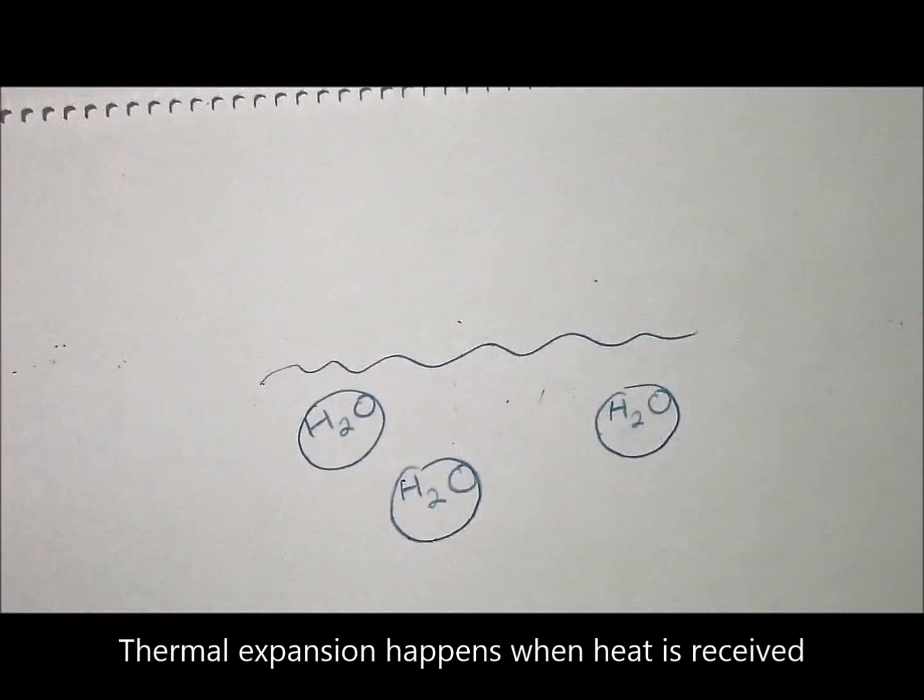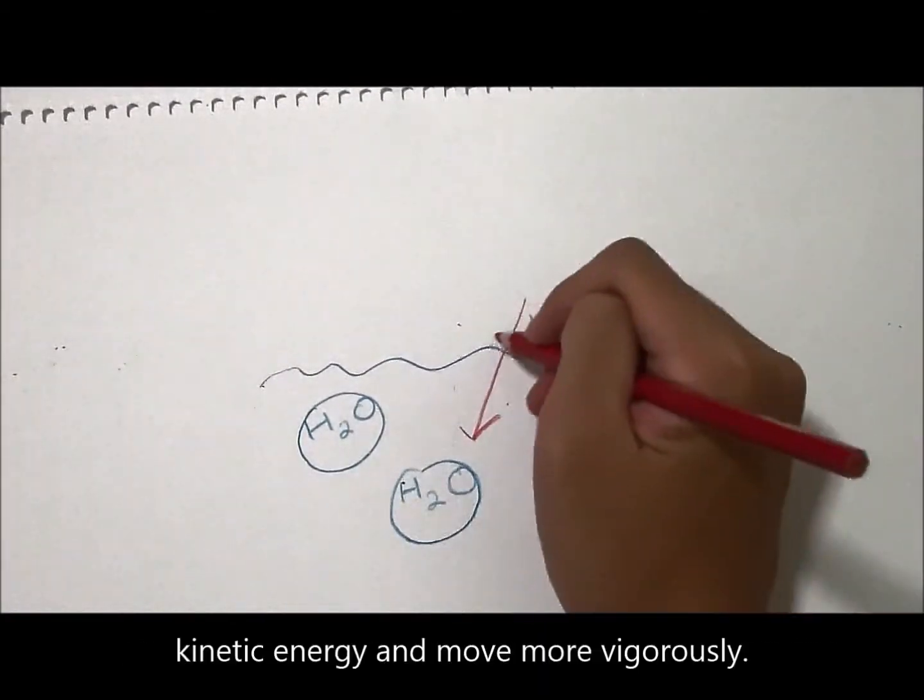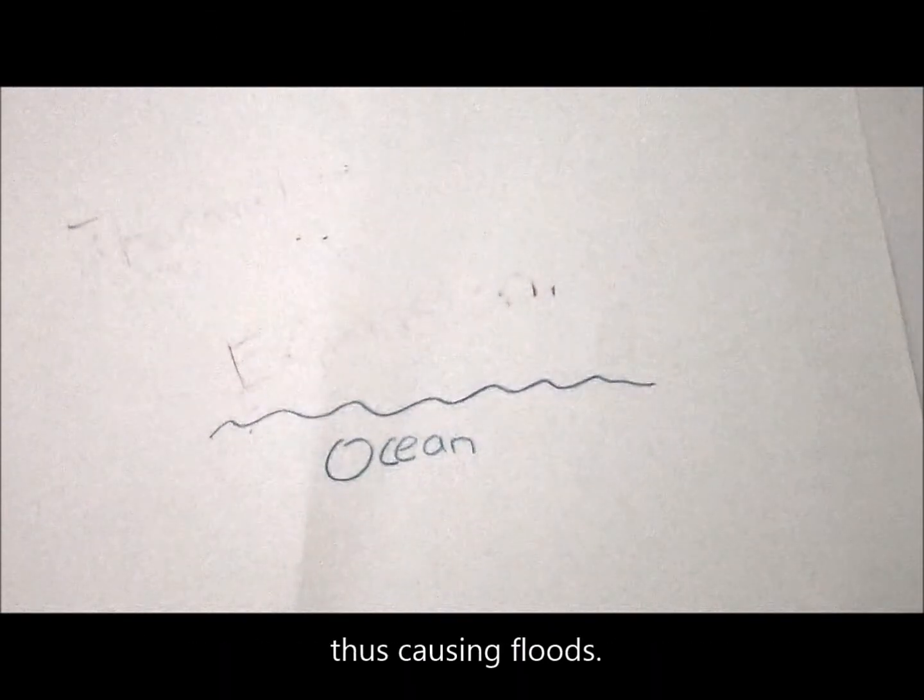Thermal expansion happens when heat is received by individual water molecules, causing them to gain kinetic energy and move more vigorously. This results in the volume of the ocean expanding, thus causing floods.